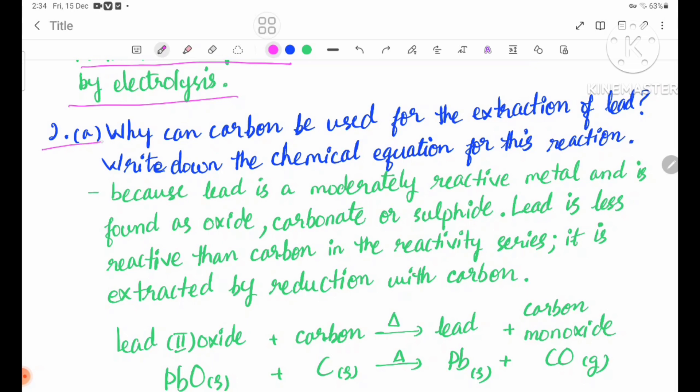Review question number two: Why can carbon be used for the extraction of lead? Write down the chemical equation for this reaction. Carbon can be used for the extraction of lead because lead is a moderately reactive metal and is found as oxide, carbonate, or sulfide.